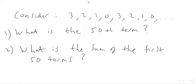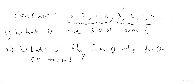In today's video we're going to look at a particular periodic sequence of order four — the same sequence we looked at yesterday. It's periodic of order four because the sequence repeats itself every four terms. We're going to answer two questions: what is the 50th term of the sequence, and what is the sum of the first 50 terms?